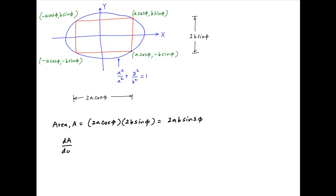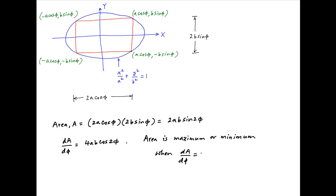The first derivative of A with respect to φ is equal to 4ab cos 2φ. The area is maximum or minimum when this first derivative equals 0. Therefore, 4ab cos 2φ = 0, which implies 2φ = π/2, which implies φ = π/4.